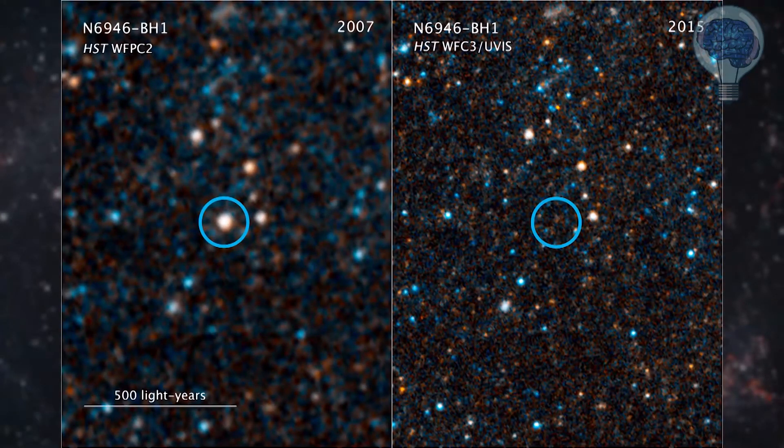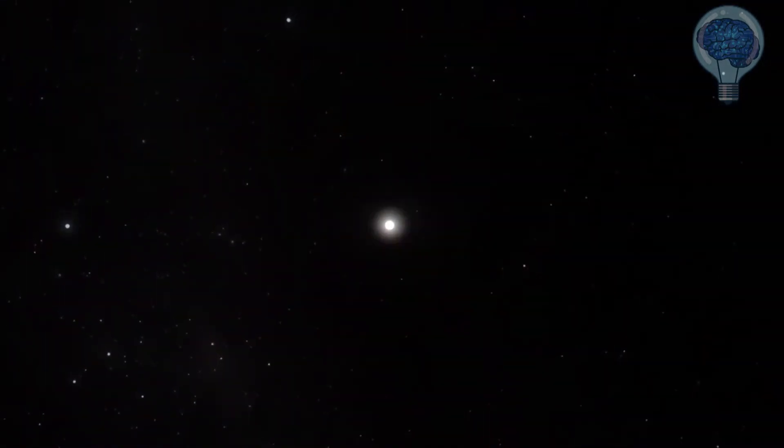One possible explanation? The star died and became a black hole. But it gets weirder. The most prevalent theory for how a black hole forms is through a supernova.